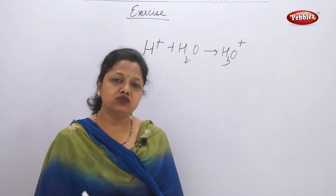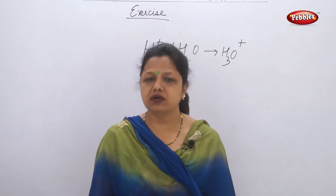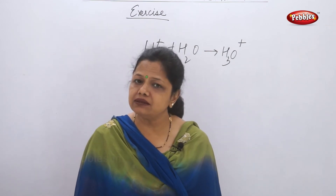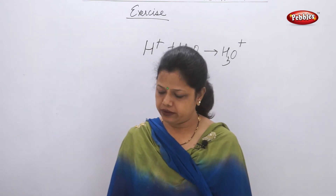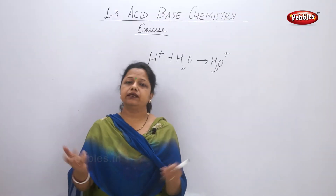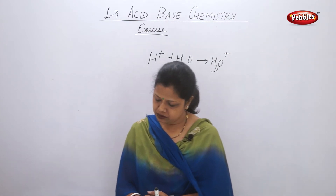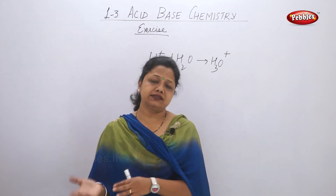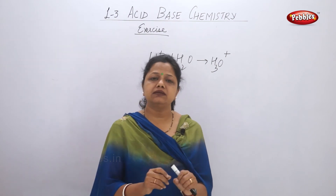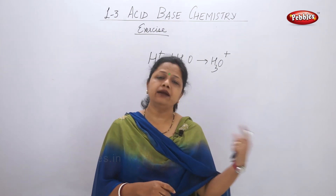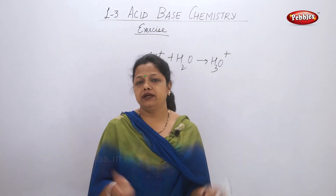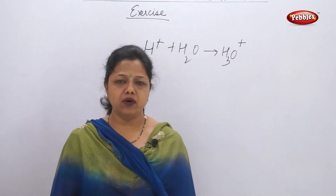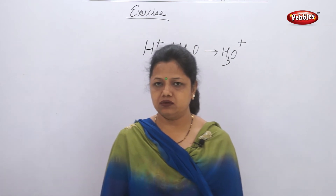Question 5: how do acids and bases react with each other? Acids contain more hydrogen ions and bases contain more hydroxyl ions. When they react with each other they neutralize each other. This type of reaction is known as a neutralization reaction. The product formed is salt and water. Because water is formed, it is called a neutralization reaction.